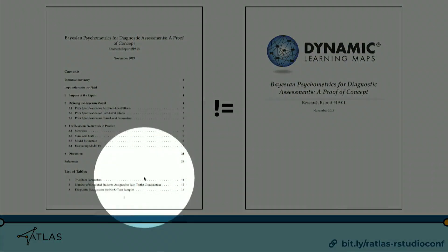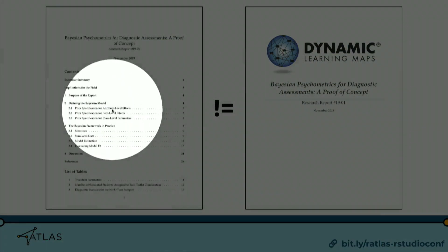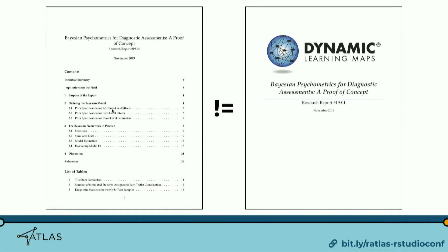The problem we faced was that the default look of R Markdown reports — shown on the left — doesn't really match what our normal reports look like on the right. Organizations like ours often have specific branding requirements: the report needs to look a certain way. So in order to use R Markdown for our technical reports, we had to make sure it matched our brand guidelines. Today I want to talk about how we made branded reports in a reproducible and scalable way.